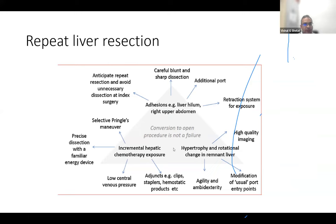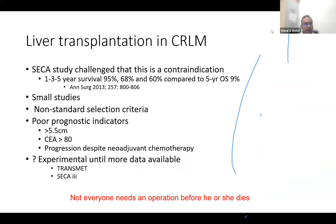Liver hypertrophy can pose technical challenges with rotation and distortion of anatomy, and previous hepatic dissection makes repeat surgery more challenging. Liver transplantation for colorectal liver metastases is increasingly discussed — data comes from the SECA study, with SECA-3 ongoing and results awaited. Most still consider it experimental, but liver transplant units are pushing forward. Poor prognosticators identified from SECA-1 — tumor diameter over 5.5 cm, high CEA levels, and progression despite chemotherapy — are being considered as contraindications.